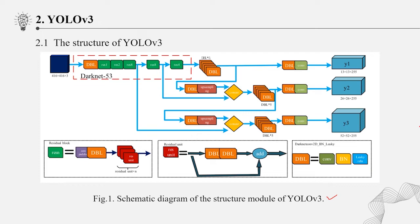The modules in the three dotted boxes below are the core structure of YOLOv3. DBL contains the corresponding convolution layer, batch normalization layer, and Leaky ReLU, which is the basic unit of YOLOv3.